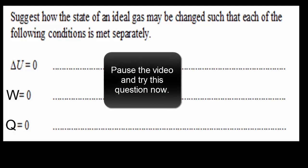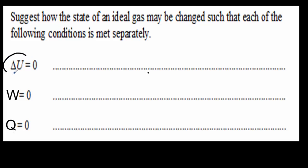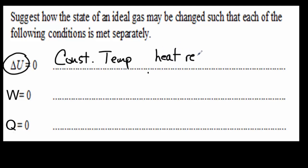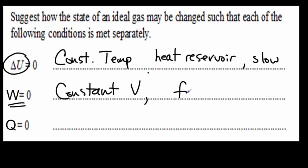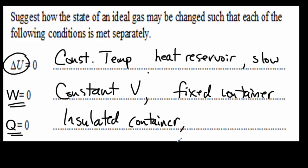Another IB question: if there's no change in internal energy, that means no change in temperature, so you need to do this at constant temperature — requiring a heat reservoir and slow motion of the piston. If no work is done, there's no compression or expansion, so you must do it at constant volume using a fixed container with no moving piston. And for an adiabatic change — no heat flowing in or out — you want an insulated container, or alternatively a very rapid motion of the piston so there's no time for heat to flow.